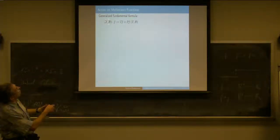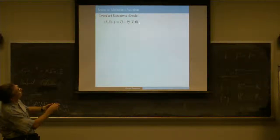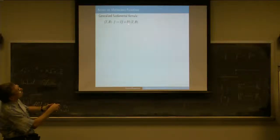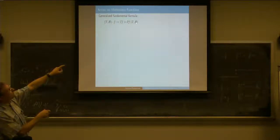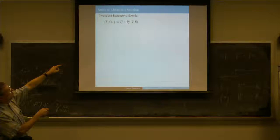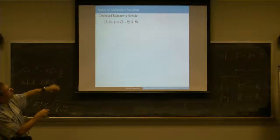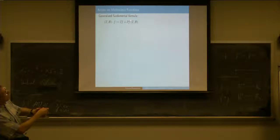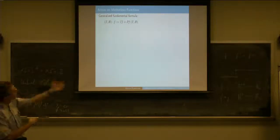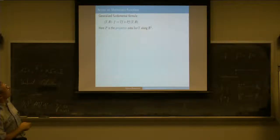A boundary problem acts on a function by acting in the normal way, but then adding to it—just like in the Mikusinski case—a trace of what is otherwise lost. The P here is the projector onto the kernel of T along the space of boundary conditions. The image of P is the kernel of the differential operator, and the kernel of P is the space of those functions that satisfy the boundary conditions. So it keeps track of all the initial values or boundary values that are lost at this differential operator.